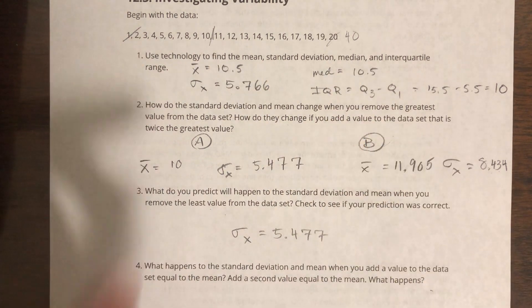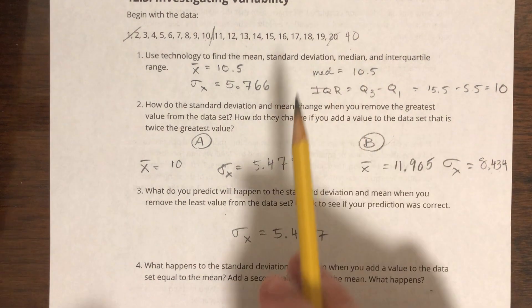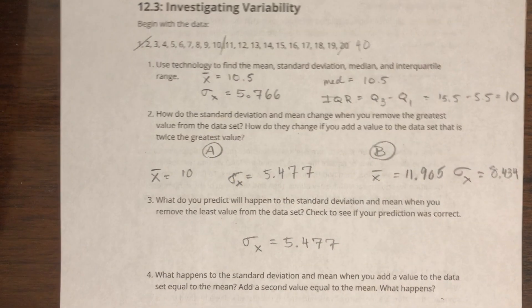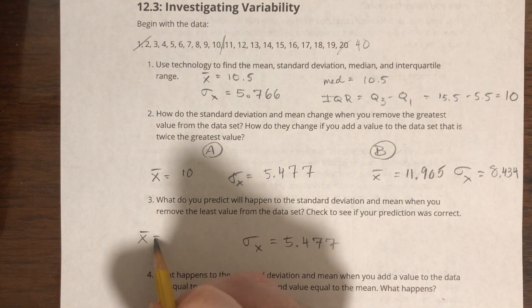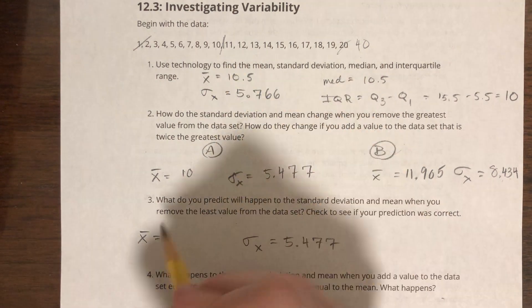Because 1 and 20 are both 9.5 away from 10.5. So I'd say removing 1 is just the same as removing 20 in terms of the standard deviation. For the mean, I imagine it will go up, so if we went down to 10, we're going to go up to 11.